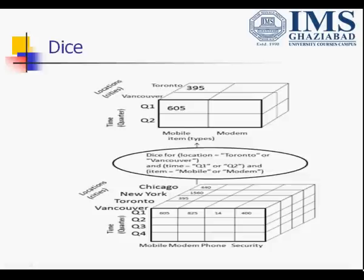Similarly, dice is used to select two or more dimensions from the data cube. We can apply a dice operation on the given cube for location either Toronto or Vancouver, time either Q1 or Q2, and item either mobile or modem. We can see the result: from the larger cube we create only a smaller two-dimension cube storing quarters Q1 and Q2, two locations — Toronto and Vancouver — and two items — mobile and modem. Whereas the larger cube had four item types, four quarters, and four cities, after dice we get only two items, two quarters, and two locations.